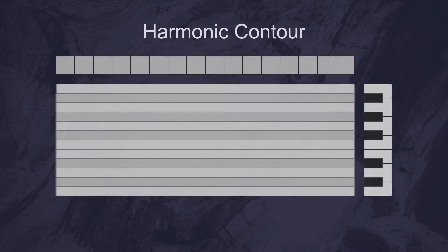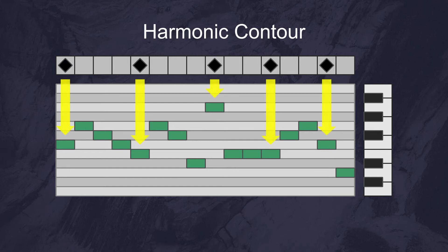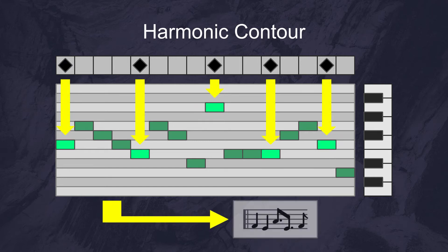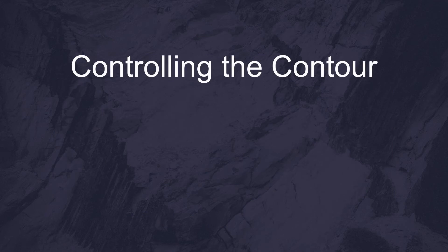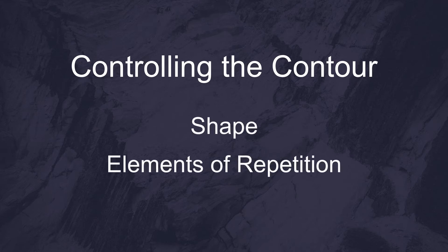The first step is the harmonic contour. This is a continuous line representing how high or low a pitch might be played. And when a rhythmic event is triggered, a note gets sent out to the instrument. We need a way to control the melodic contour so that we can direct it to our musical intention. So there are three things that we need to define: the shape of the line, the elements of repetition, and the pitch register.